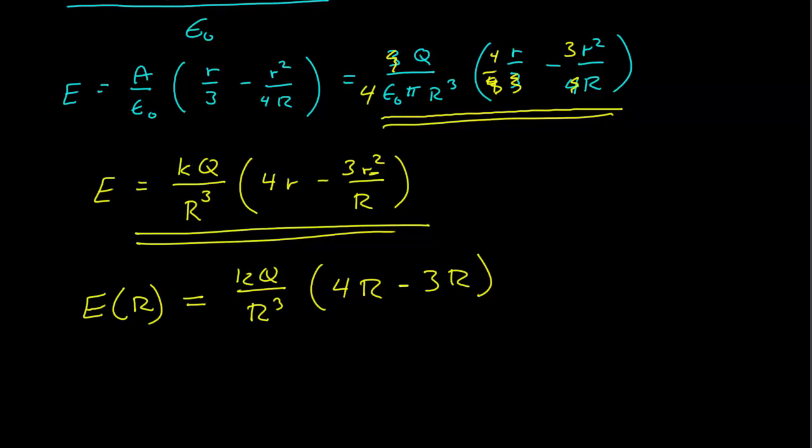I get 3R, so this just gives me one R, that one R cancels one of those, KQ over R squared, and it checks out. You always want to check your work to see that you're on the right track, and this is the sort of obvious check that you always make. If you calculate something in two regions of space, and you know that it has to be continuous, you make sure that they're equal to each other at the boundary.